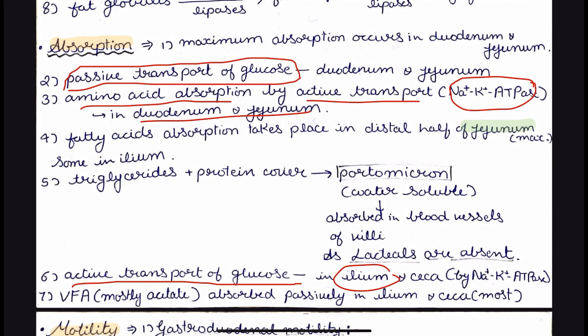The most important point in the absorption process is portomicron, or fat absorption. Fat is digested to fatty acids and triglycerides, and fatty acid absorption takes place in the distal half of the jejunum. In birds, lacteals are absent. In mammals, lacteals are lymph vessels for the absorption of fatty acids in the form of chylomicrons. But in birds, lacteals are absent, so the fatty acids and triglycerides are covered by a protein coat to form a structure called portomicron. Portomicron is the avian counterpart of the mammalian chylomicron. It is water-soluble and is absorbed into the blood vessels present in the villi.